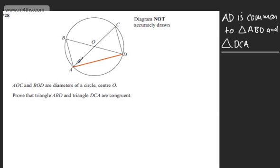My next statement is that AC will be equal to BD. They're diameters of a circle, so they're going to be of the same length. AC equals BD, diameter of circle.